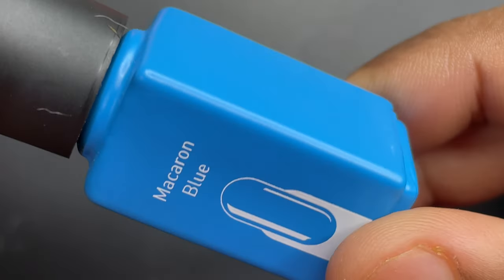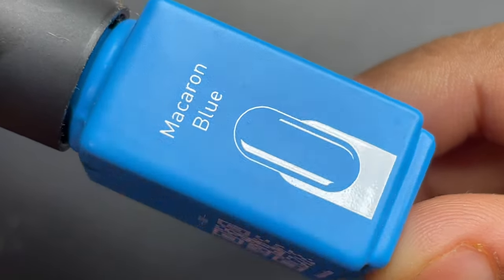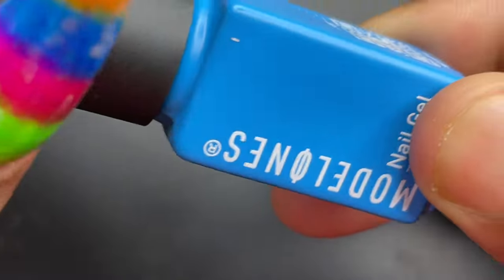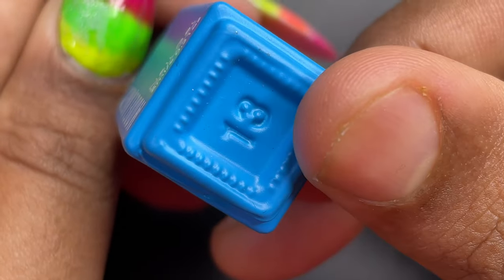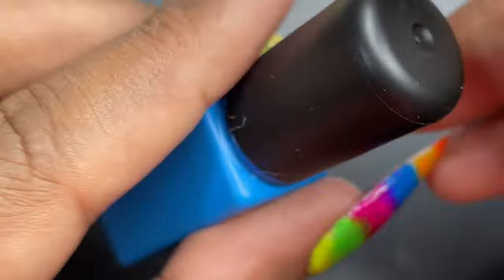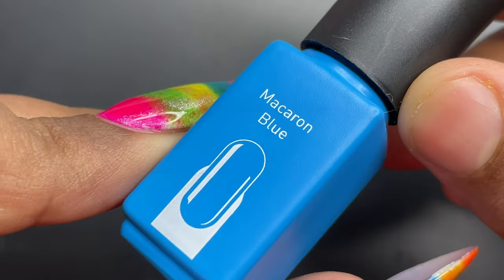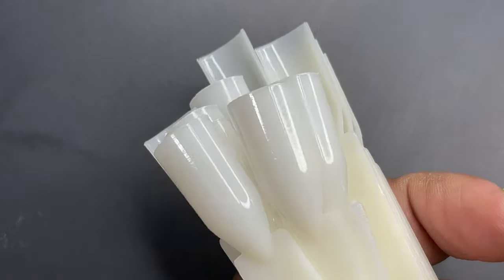Before I swatch, let's have a quick look at the bottle. This is how the bottle looks - it's a 6ml bottle. As you can see, on one side we have the shade name and the QR code, and on the other side we have the brand name. It's a really tiny bottle, just 6ml only.